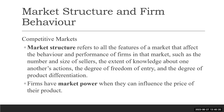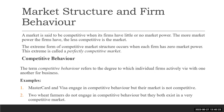A market is said to be competitive when the firm has little or no market power. The more market power a firm has, the less competitive the market is. The extreme form of a competitive market occurs when each firm has zero market power — that is the ideal competitive market, which we call a perfectly competitive market.